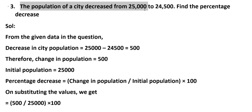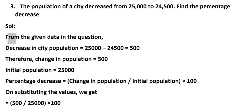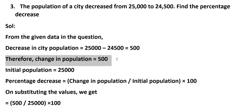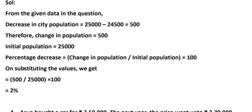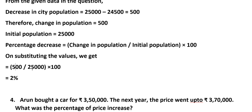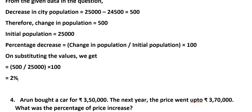Third problem: the population of the city decreased from 25,000 to 24,500. Find the percentage decrease. Solution: decrease in population = 25,000 − 24,500 = 500. Initial population = 25,000. Percentage decrease = (Change in Population ÷ Initial Population) × 100 = (500 ÷ 25,000) × 100. Cancelling zeros, 50 ÷ 25 = 2. The percentage decrease is 2%.